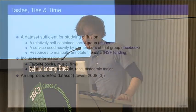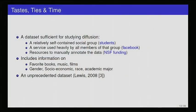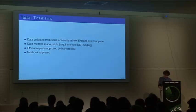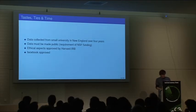This Tastes, Ties, and Time data contained information on gender, socioeconomic status, race, academic major, things sociologists believe play an important role in many of these fundamental questions. And it also included information on what people's favorite books were, their favorite bands, films, etc. In many ways it was an unprecedented data set. It was collected from a small university in New England over four years. According to the terms of the funding it had to be made public. The ethical aspects of the study were approved by the Harvard Institutional Research Board, and Facebook also was aware of this study and approved of it.